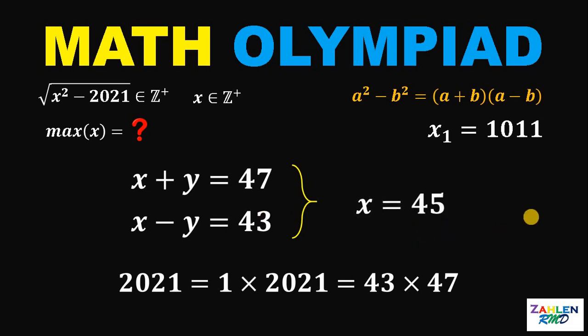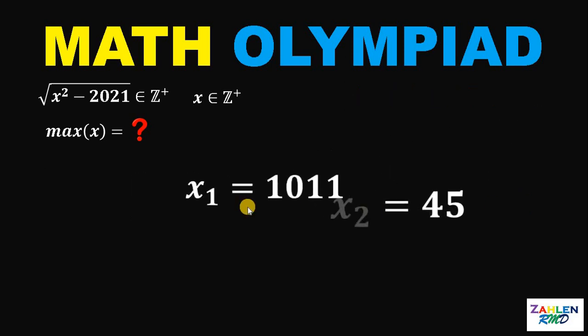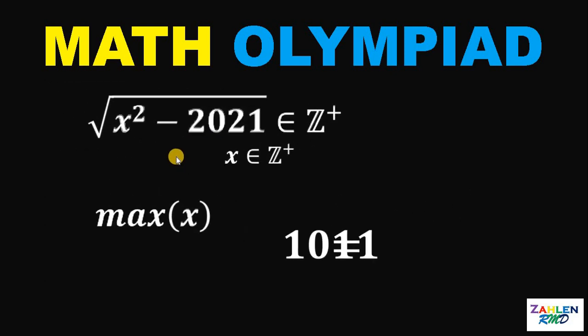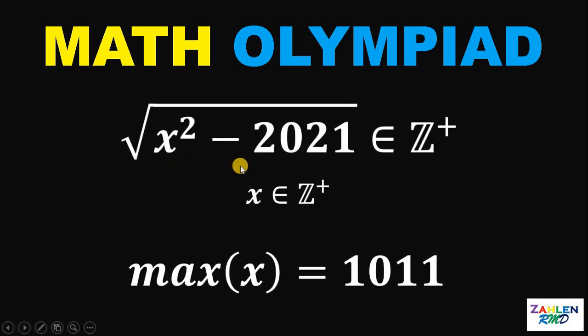Now we have two possible values for x. The first one is 1,011 and the second one is 45. Don't forget that we want the maximum value of x. Therefore, if square root of x minus 2021 and x are both positive integers, then the maximum possible value of x must be 1,011.